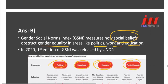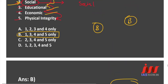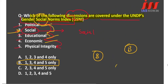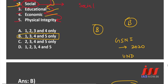One more important point: in 2020, the first edition of GSNI was released by UNDP. So keep these two points in mind about GSNI: it was released in 2020 and published by UNDP.